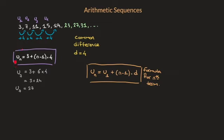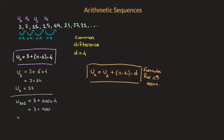What's important to realize looking at the formula for the nth term is that the number multiplying the common difference D is always 1 less than the number of the term we're after. For instance, for the 4th term, I'd have 3 multiplying D; for the 9th term, I'd have 8 multiplying D; for the 100th term, I'd have 99 multiplying D. To illustrate, let's calculate the 101st term: u sub 101 equals 3 plus (101 minus 1), which is 100, times 4. That's 3 plus 400, giving us the 101st term equal to 403.